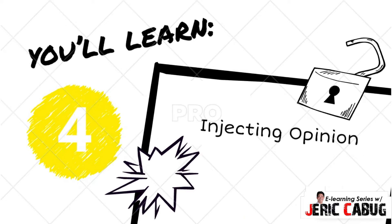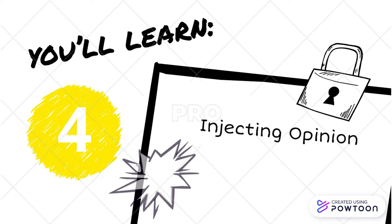Another tip for science writing is injecting opinion. For science writing, remember that the focus is on writing about technical topics. Writing can be creative, but that doesn't mean it has to be opinionated — unless it is an opinion editorial. The writer's personal viewpoints aren't relevant to the discussion. Only report what the sources have mentioned. Airing your views can diminish the credibility of your article.